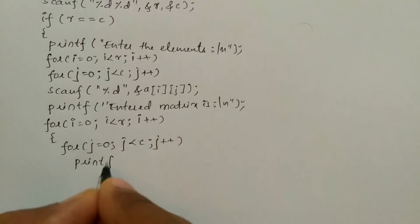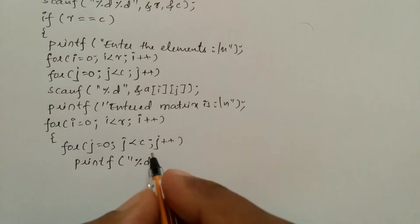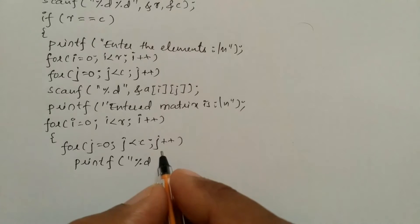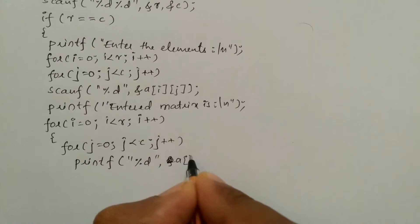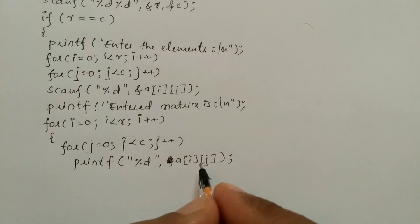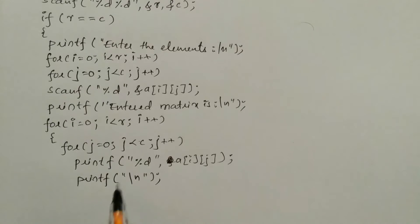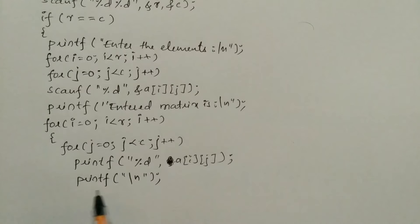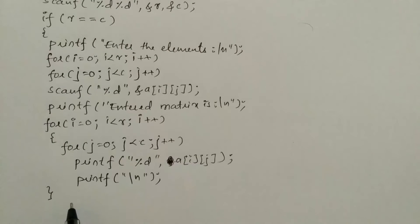Next we'll write a printf statement and using format specifier %d in double quotation marks, we'll write a of i j — because ampersand comes only in a scanf statement — and put semicolon. After this I'm going to write one more printf statement with backslash n, because after each row the control has to come down to the next line so that it inserts the element in the next row. That's the reason we write this printf statement. And for the respective opening brace we have to put curly closing brace.